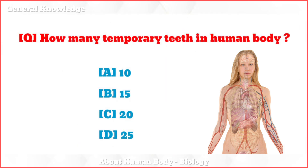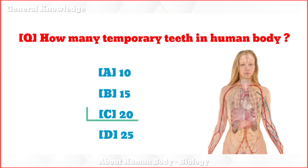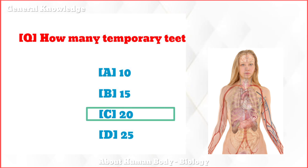How many temporary teeth are present in the human body? The correct answer is option C: 20.